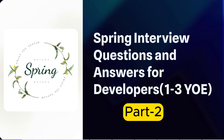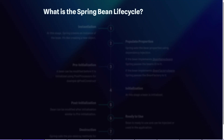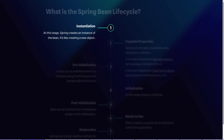Without much delay, let's start. The first question is: what is the Spring bean's life cycle? A Spring bean is a class whose object will be managed by the Spring framework — it is also known as a managed bean. Its lifecycle involves many stages from creation to destruction. The first stage is instantiation, where Spring creates an instance of the bean, like creating a new object managed in the Spring IoC container.